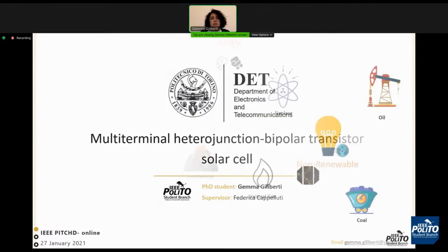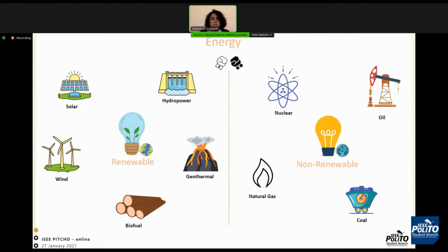First of all, a brief introduction about different kinds of energy sources. They can be divided into non-renewable and renewable sources. The non-renewable sources are the most exploited and are responsible for global warming and atmospheric pollution since they are based on fossil fuel systems.